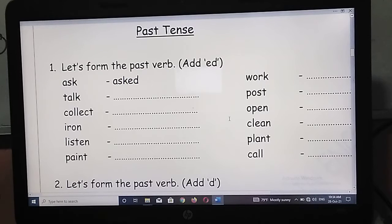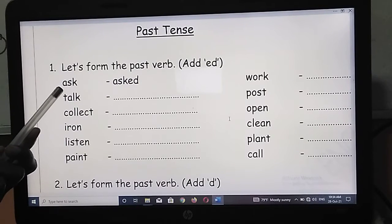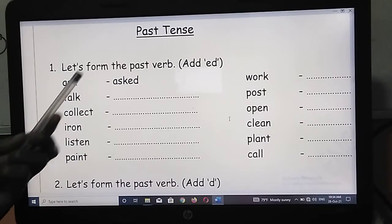If you look at the screen, you can see some verbs. These are the actions that we do. The first method we use to form the past verb is add ED to the base verb. When there is a base verb, you can add ED.